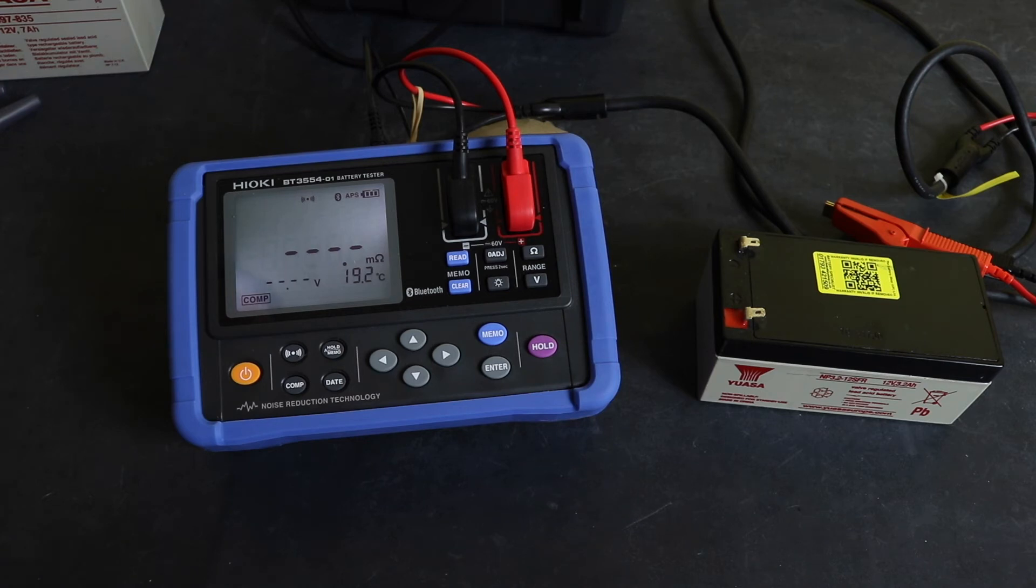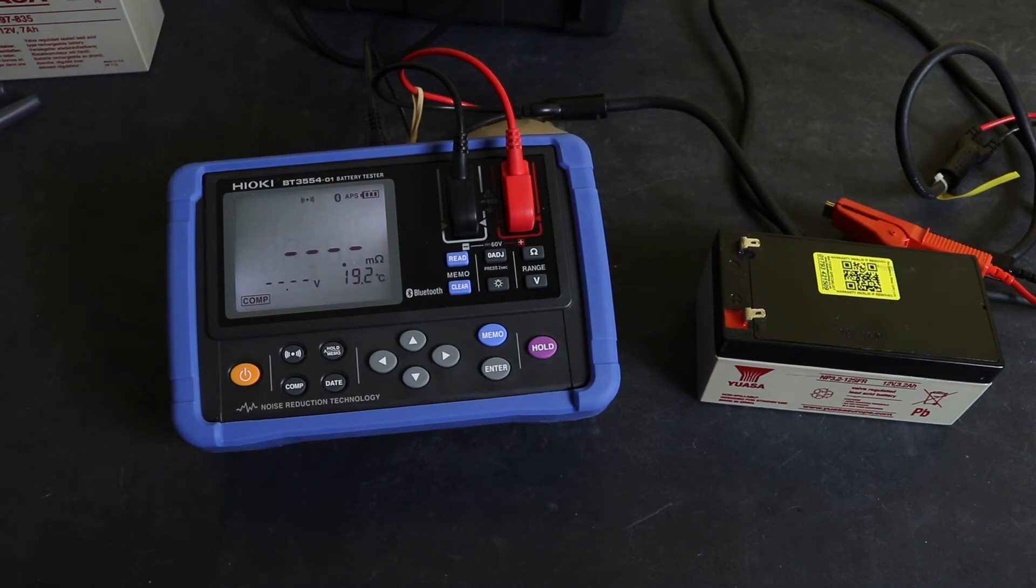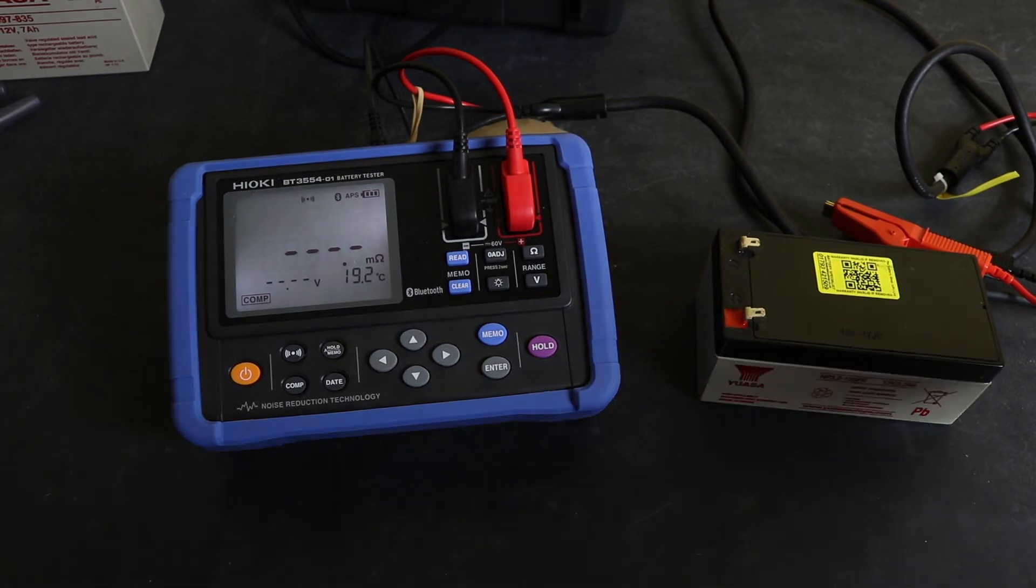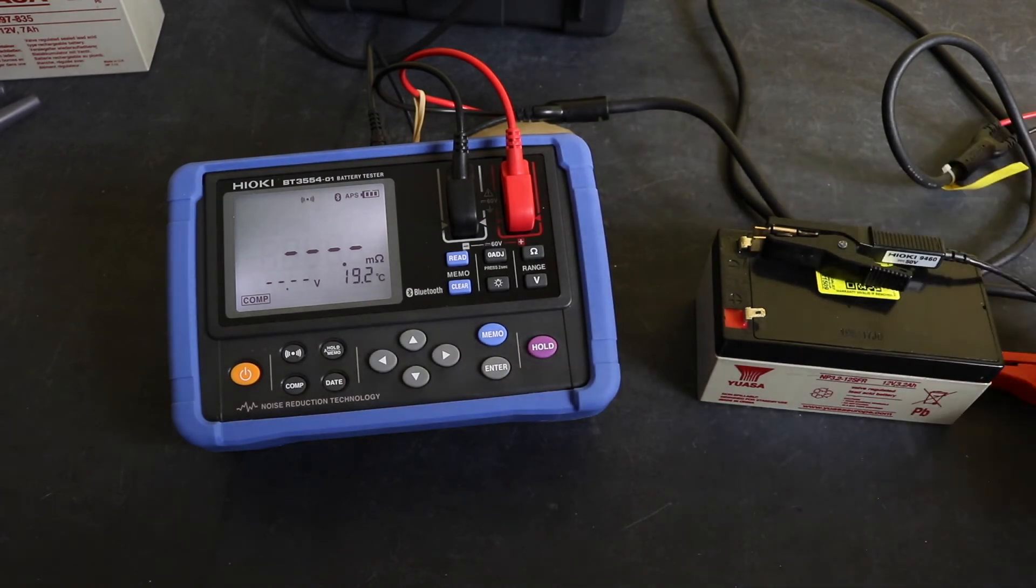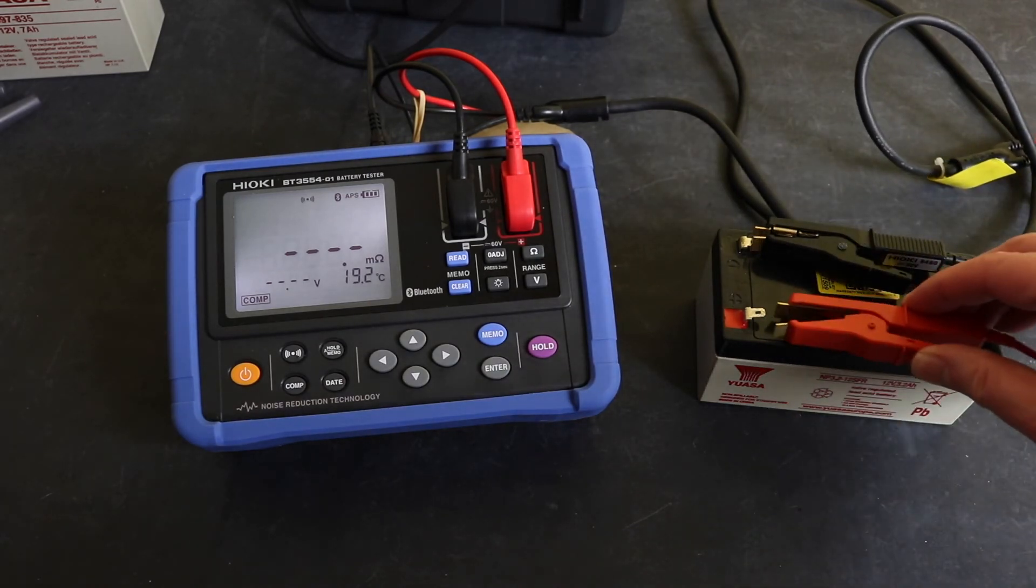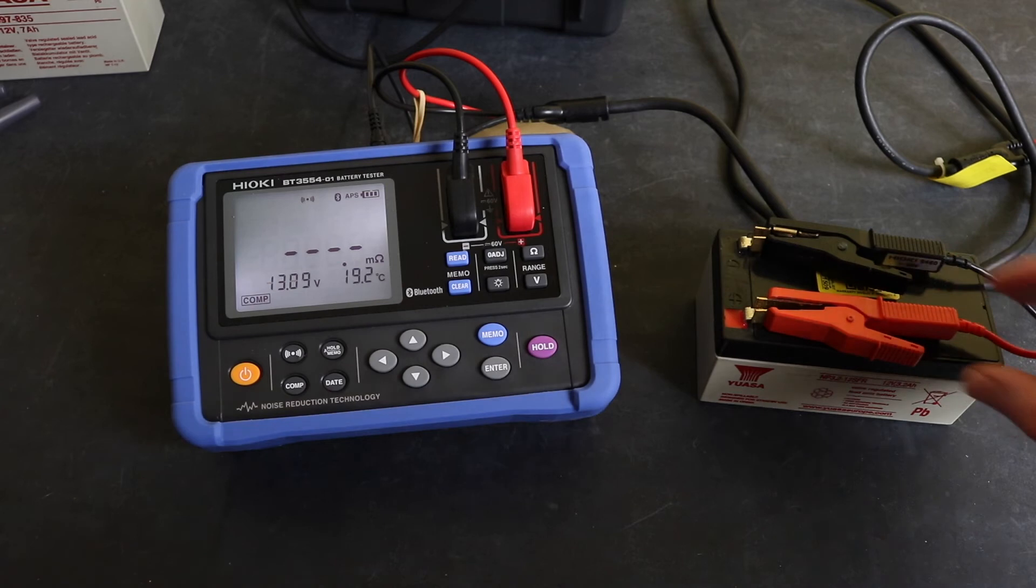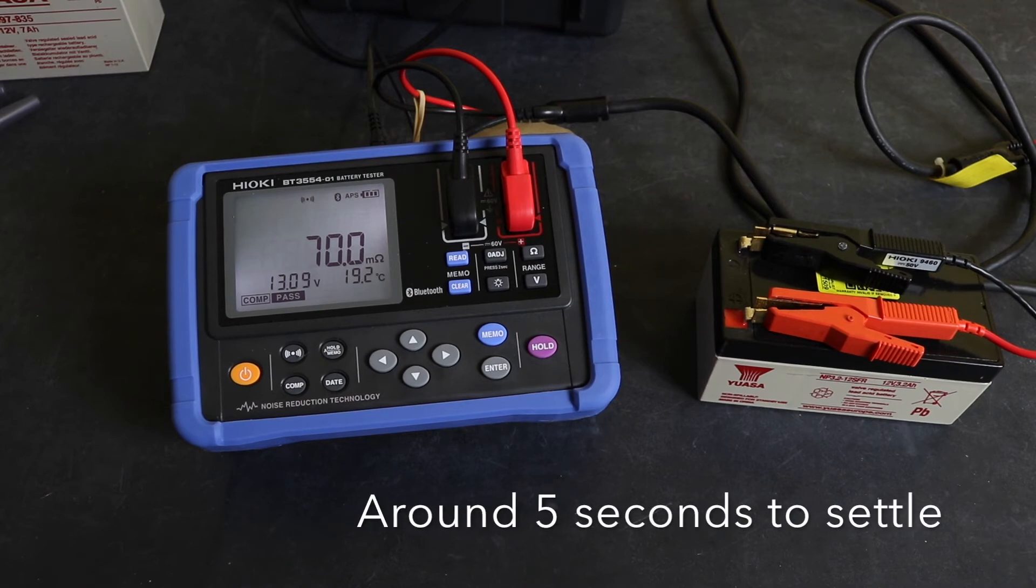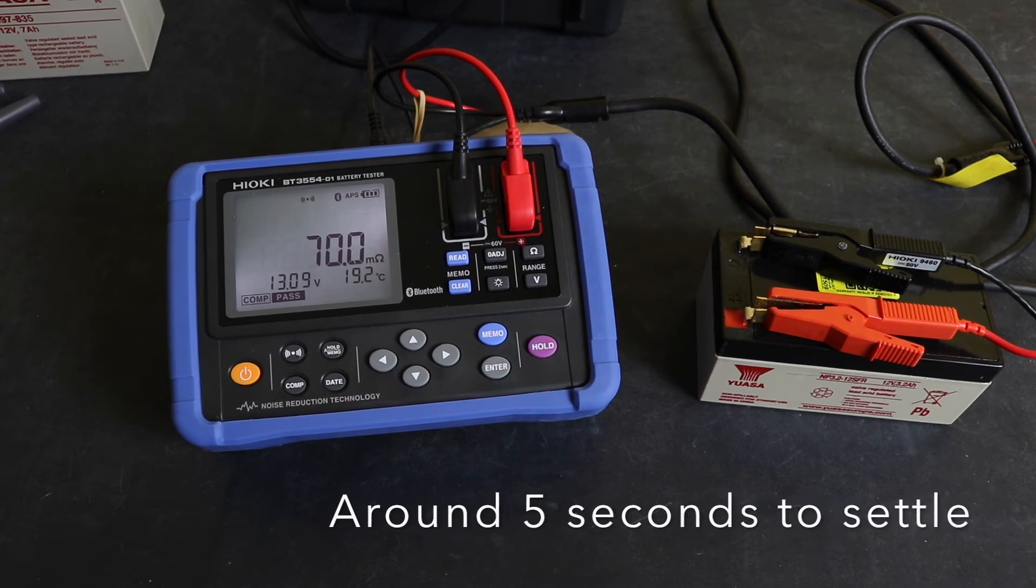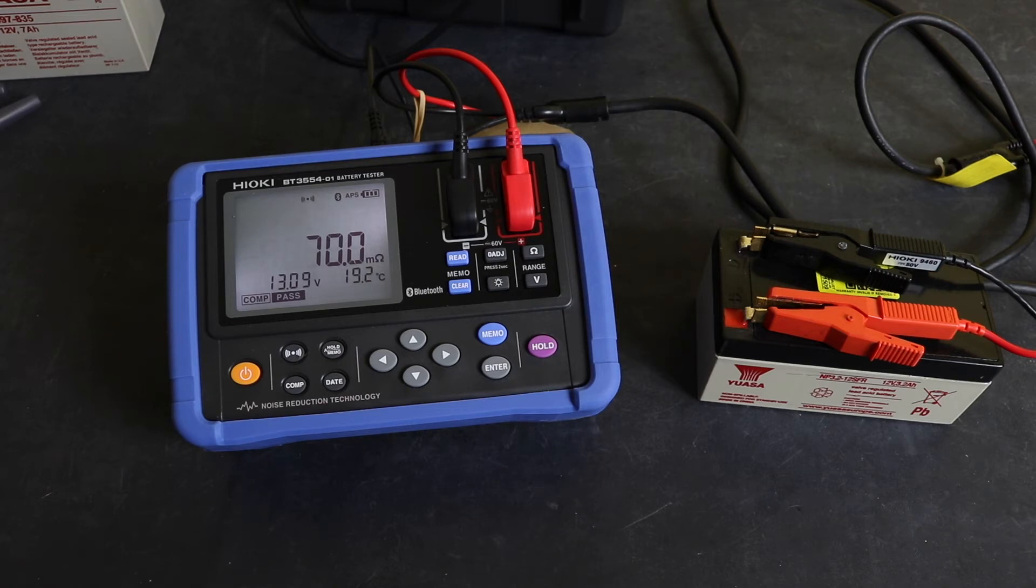We'll do exactly the same again with the reading. Black clip on, red clip on, and you can see 70 - much quicker reading. That settled on 70.0. You can see the pass light in the bottom left hand corner next to the comparison symbol.